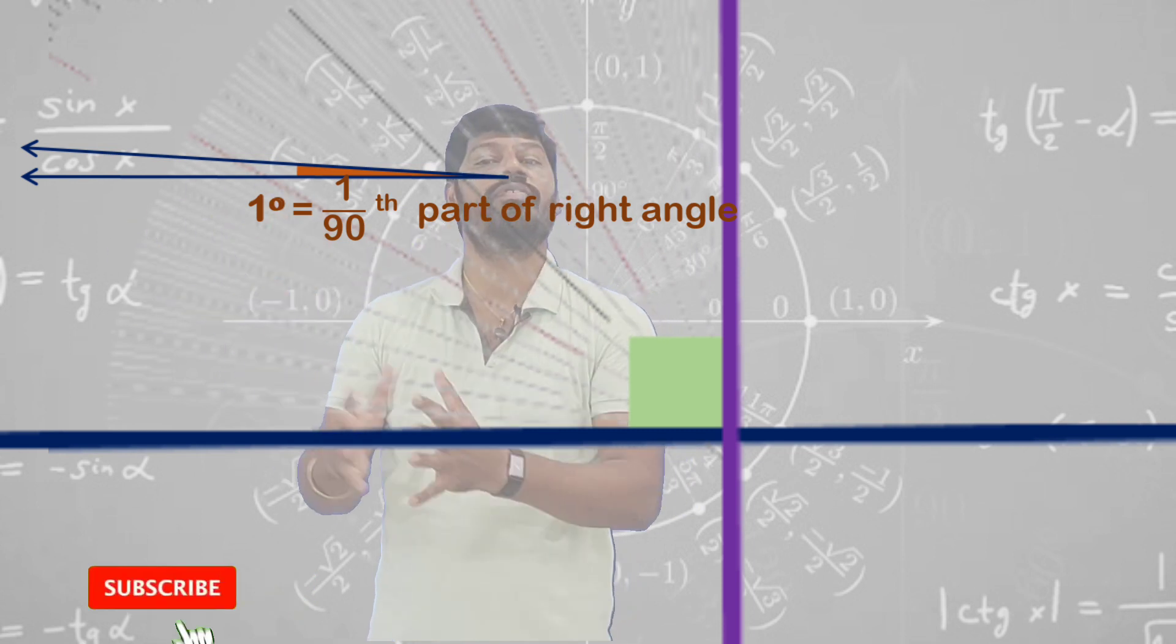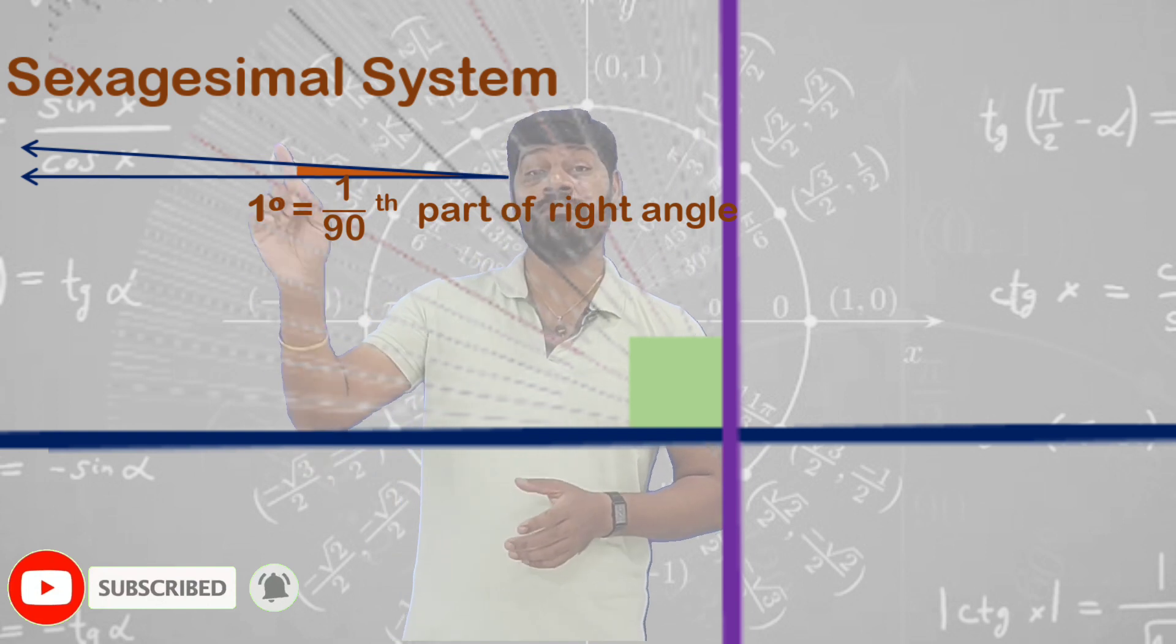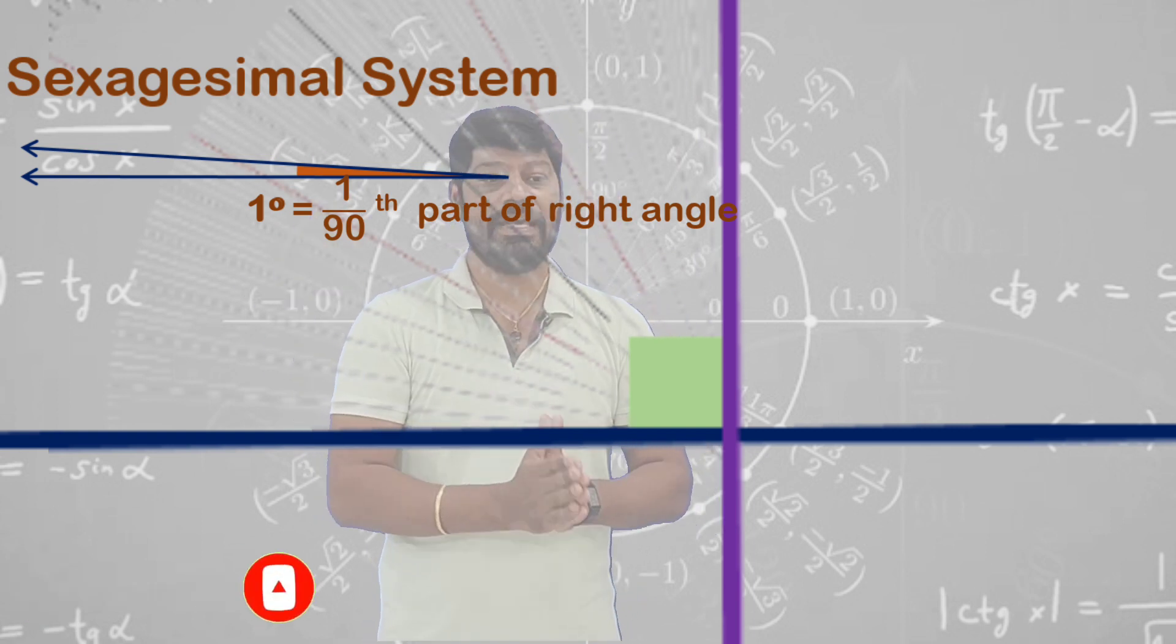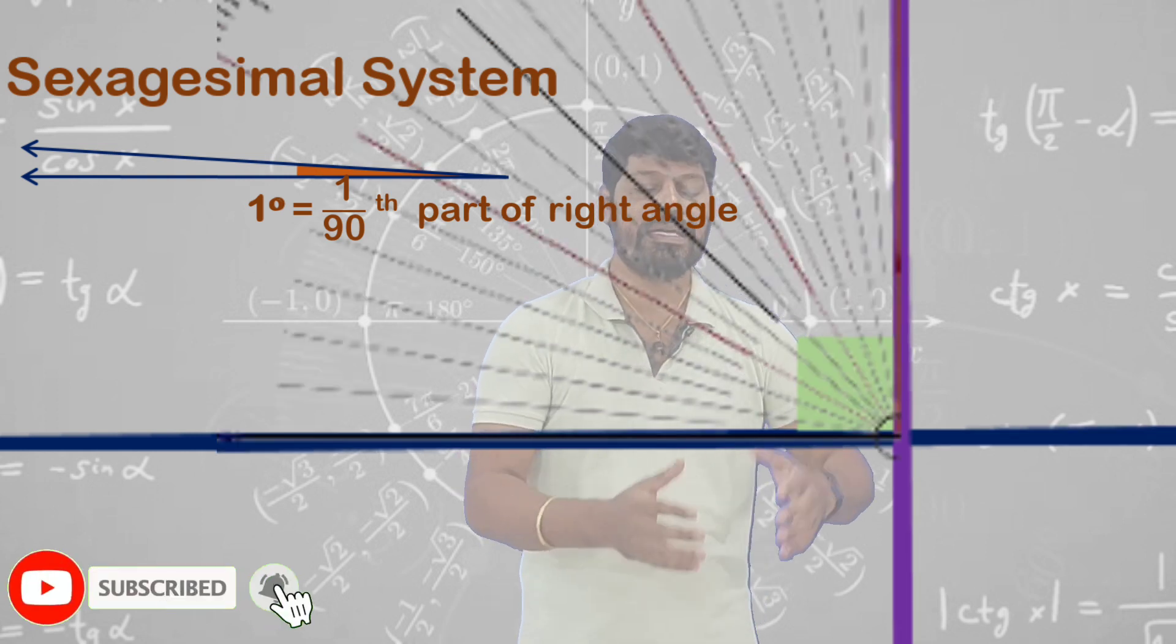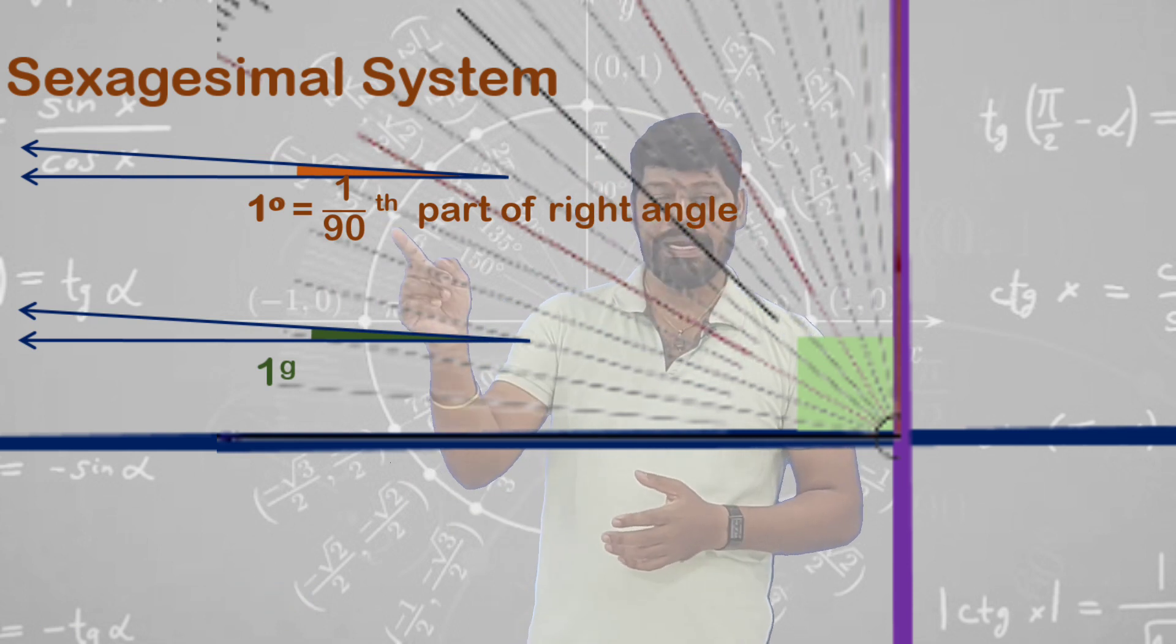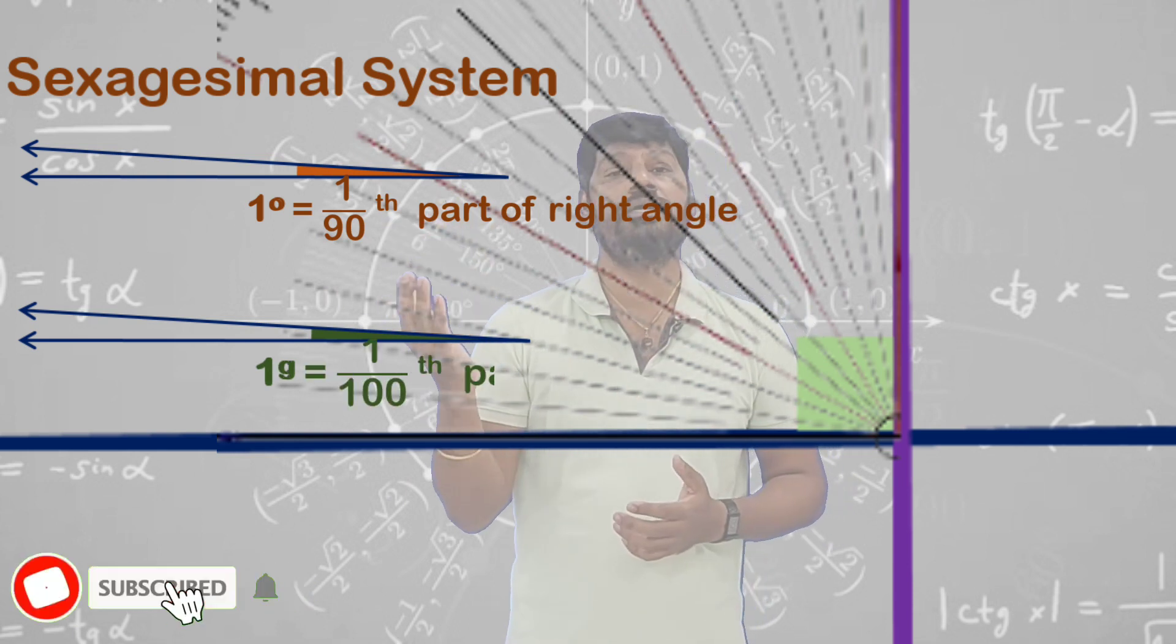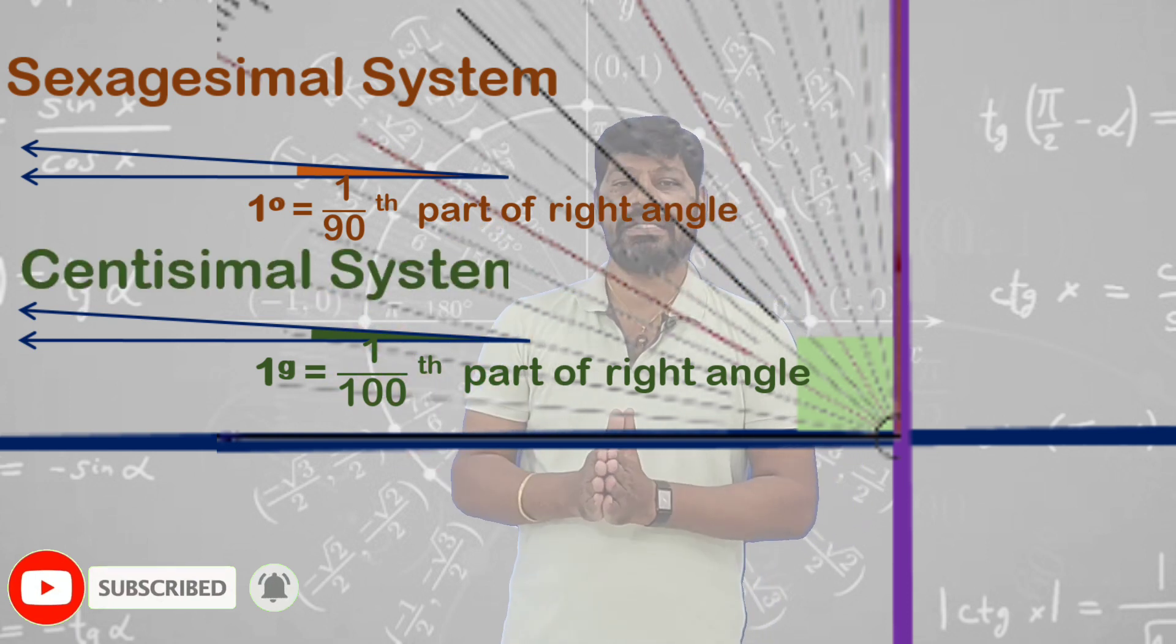This is the most familiar thing and this is called the sexagesimal system. Apart from this system, there is one more system. The same right angle, instead of dividing into 90 equal parts, if you divide into 100 equal parts, each part will be considered as one grade, which is one by 100th part of a right angle, and this system is called centisimal system.